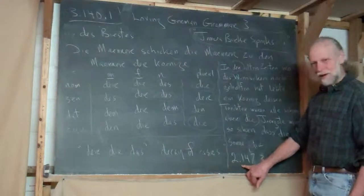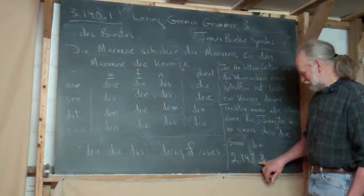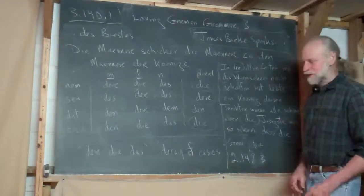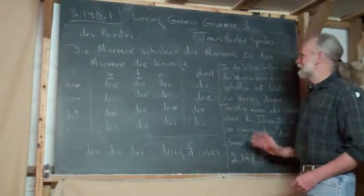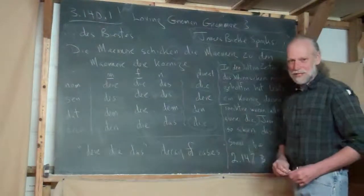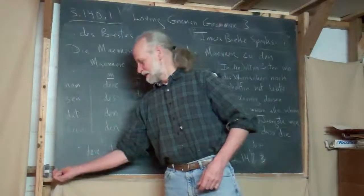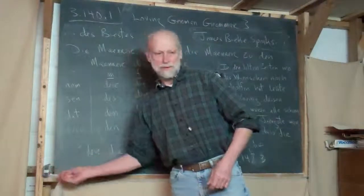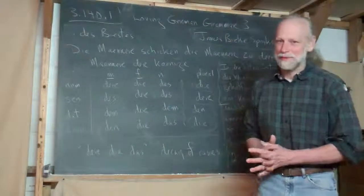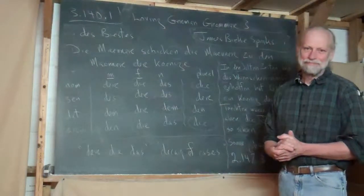If you go to that — I'll put the link in the description — the number is 2.147.3. There you'll hear Shirley reading that sentence, and you can see it as well. She reads the whole story. I hope you're beginning to love German grammar. See you next time. Thank you.